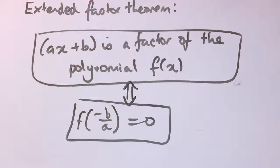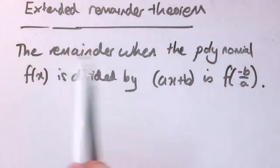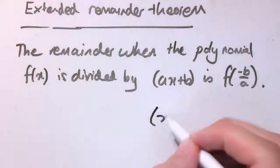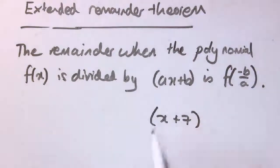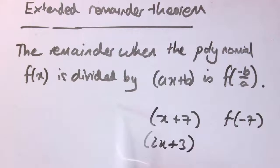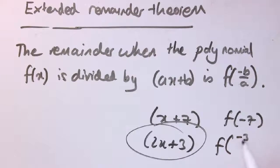This same idea applies exactly to the remainder theorem as well. The extended remainder theorem says that the remainder when the polynomial f(x) is divided by the factor ax plus b is f of minus b over a. In the case of something simple like x plus 7, this is just f of minus 7. But if I've got 2x plus 3, the remainder is whatever I get when I put into the function minus 3 over 2.